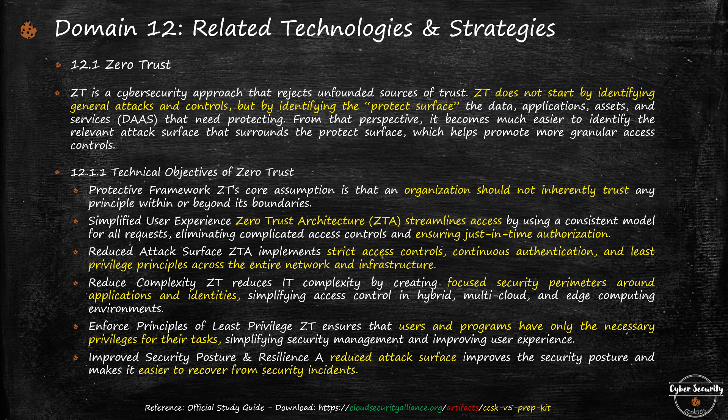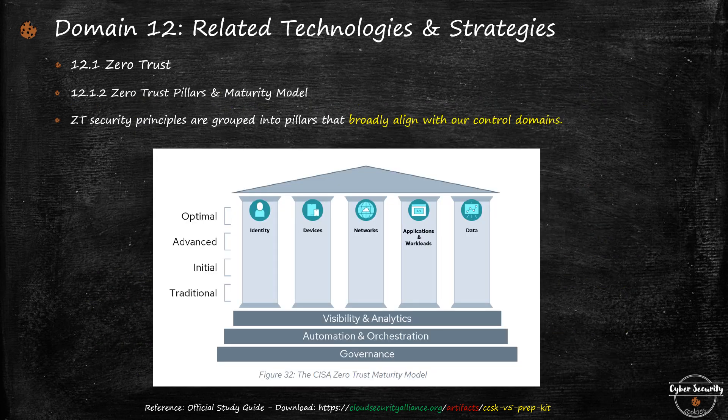The key goal is to reduce the attack surface and recover from security incidents — that is the primary objective of Zero Trust. In this diagram you'll see the Zero Trust pillars and maturity model from the CISA Zero Trust Maturity Model. The pillars are: identity, devices, network, applications and workloads, and data. Cutting across these verticals are visibility and analytics, automation and orchestration, and governance. For identity, the focus is securing and limiting access for person, non-person, and federated identities, using multi-factor authentication.